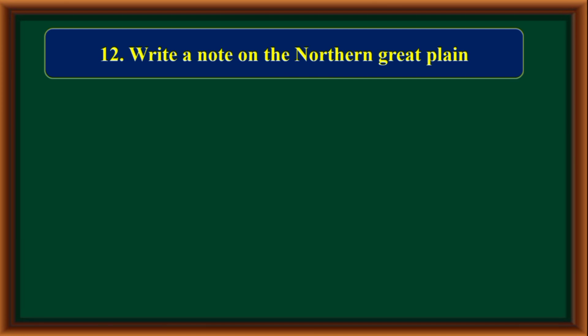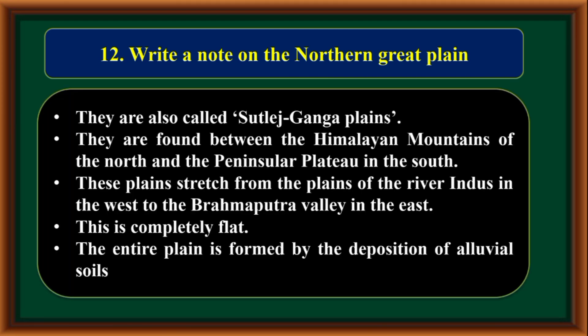Write a note on the Northern Great Plain. They are also called the Sutlej-Ganga Plains. They are found between the Himalayan mountains in the north and the peninsular plateau in the south. These plains stretch from the river Indus plains in the west to the Brahmaputra valley in the east. This is completely flat, formed by the deposition of alluvial soils.